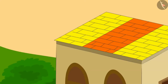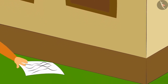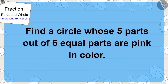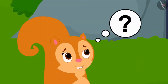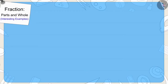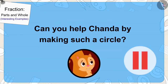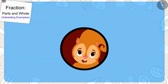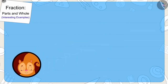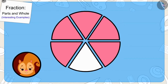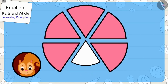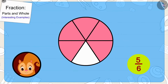Now, Chanda found her last clue near Golu's house. It was written that she has to find a circle whose five parts out of six equal parts are pink in color. Chanda does not know what this circle will look like. Can you help Chanda by making such a circle? You can find the answer by stopping the video. Well done, children. You have made it perfectly.